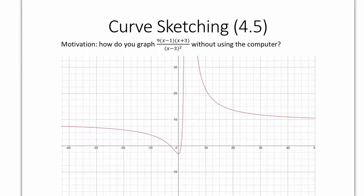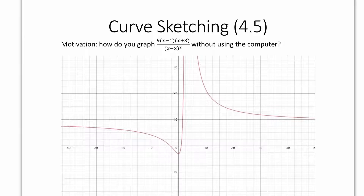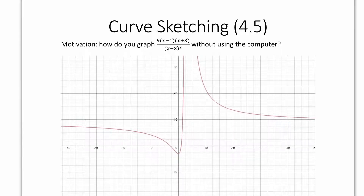In this video we're going to look at some advanced curve sketching — this is section 4.5 in your textbook. The motivation is graphing a crazy function like 9(x−1)(x+3) over (x−3)² without a computer or Desmos. Calculus allows us to find things like concave down or concave up nature, relative minima, and relative maxima that pre-calculus rules alone can't easily give us.